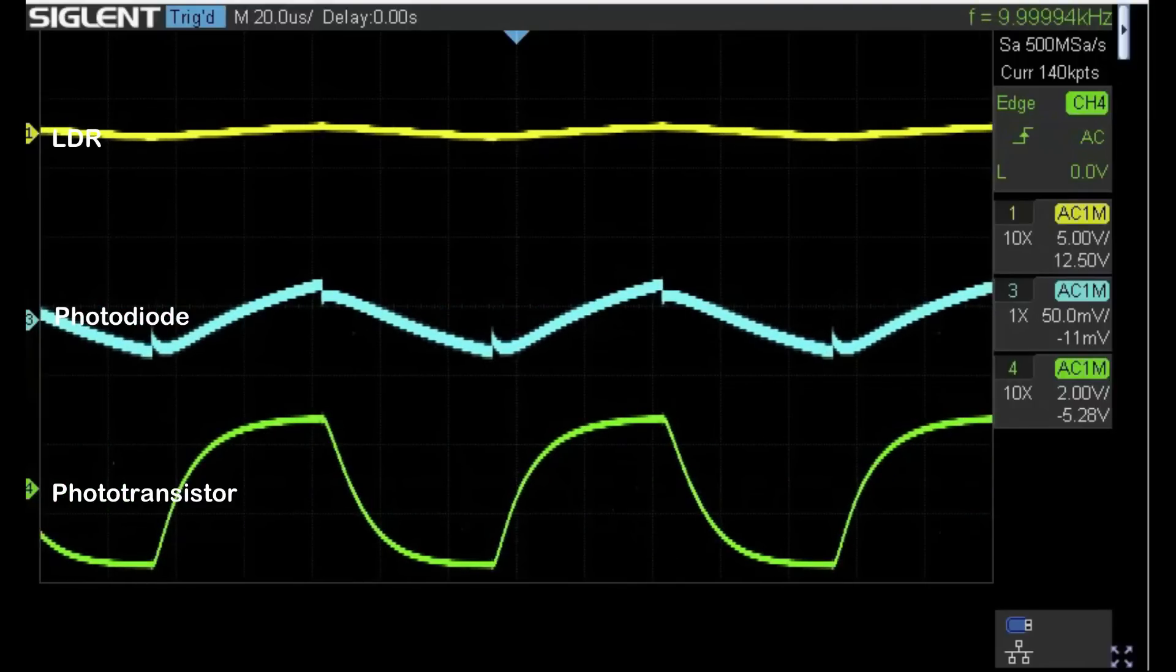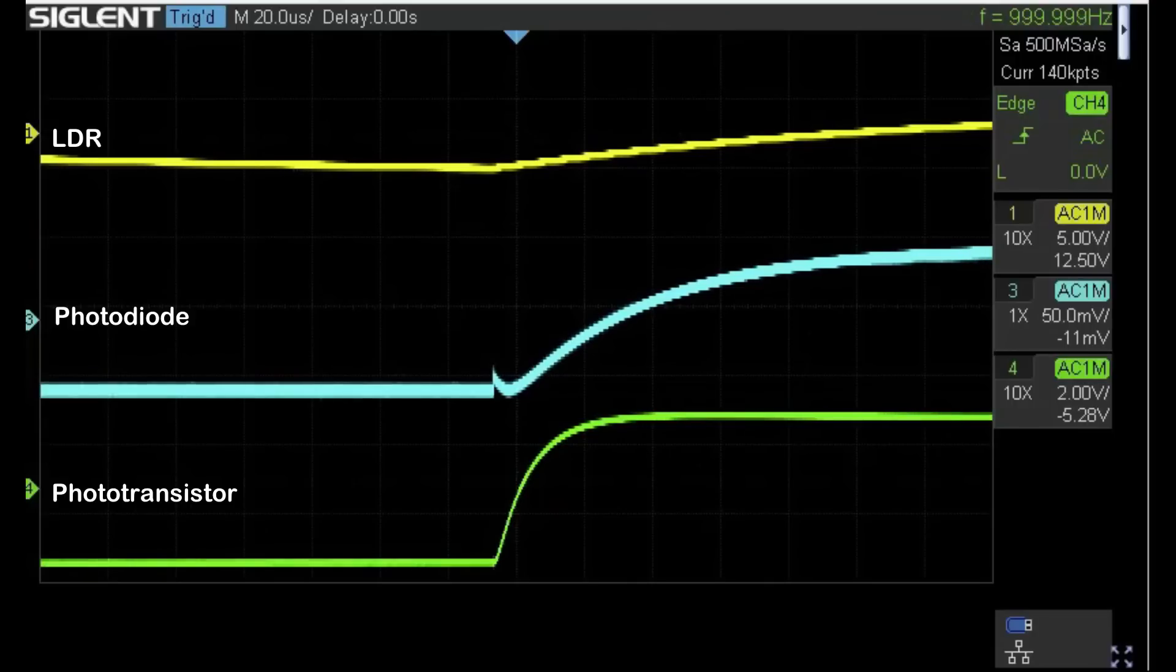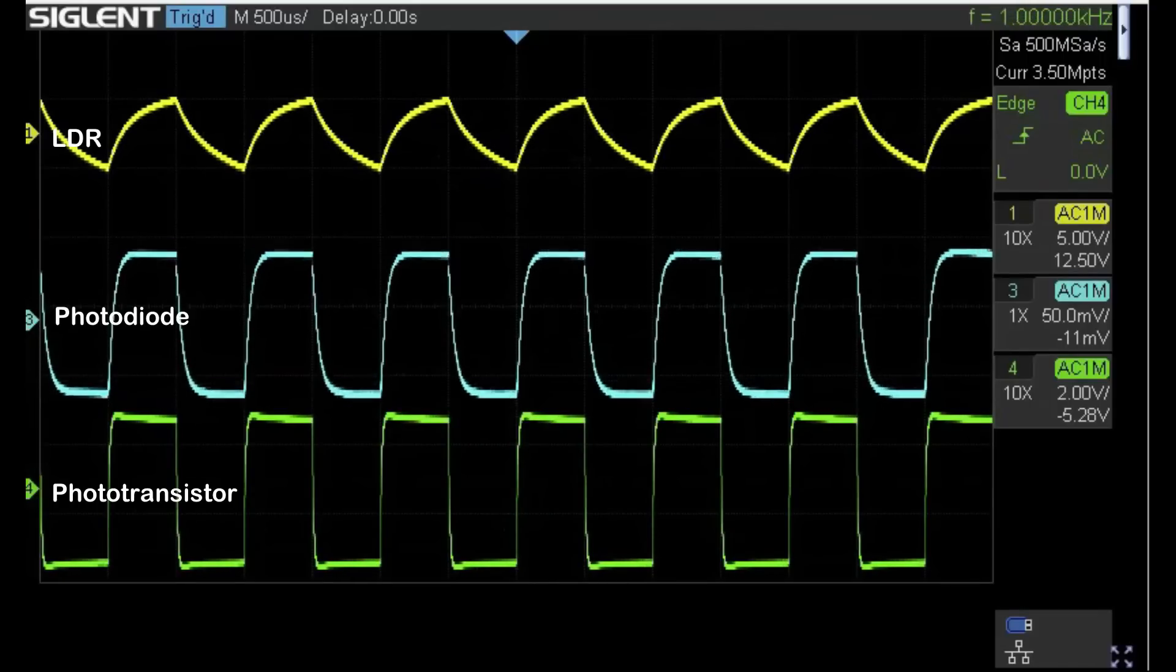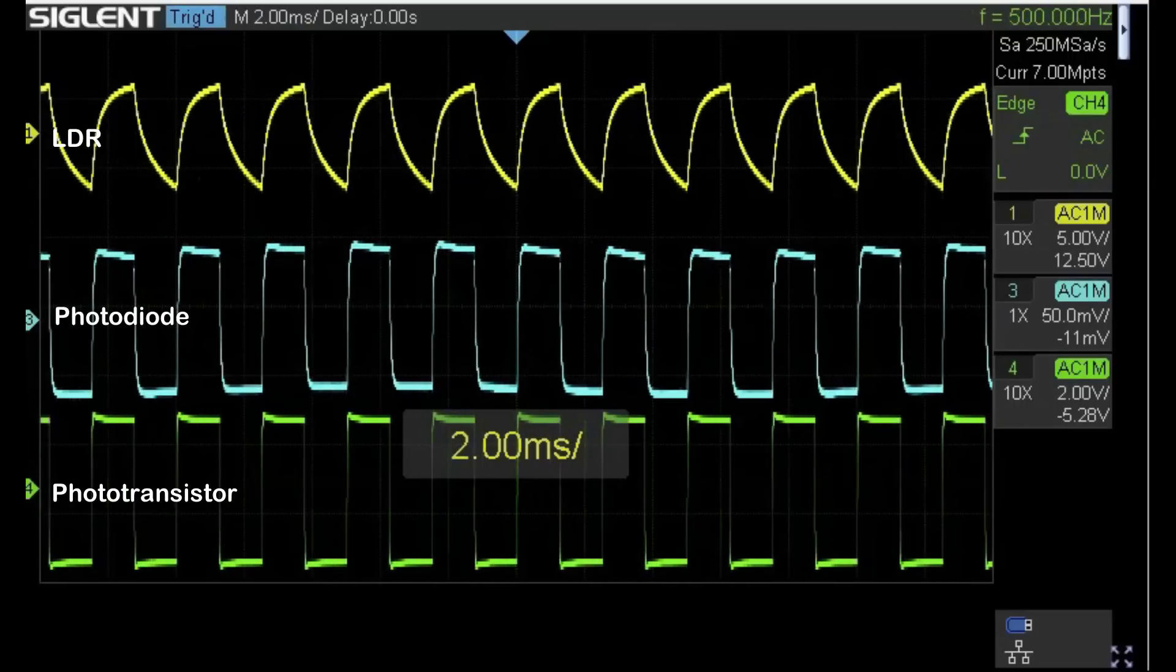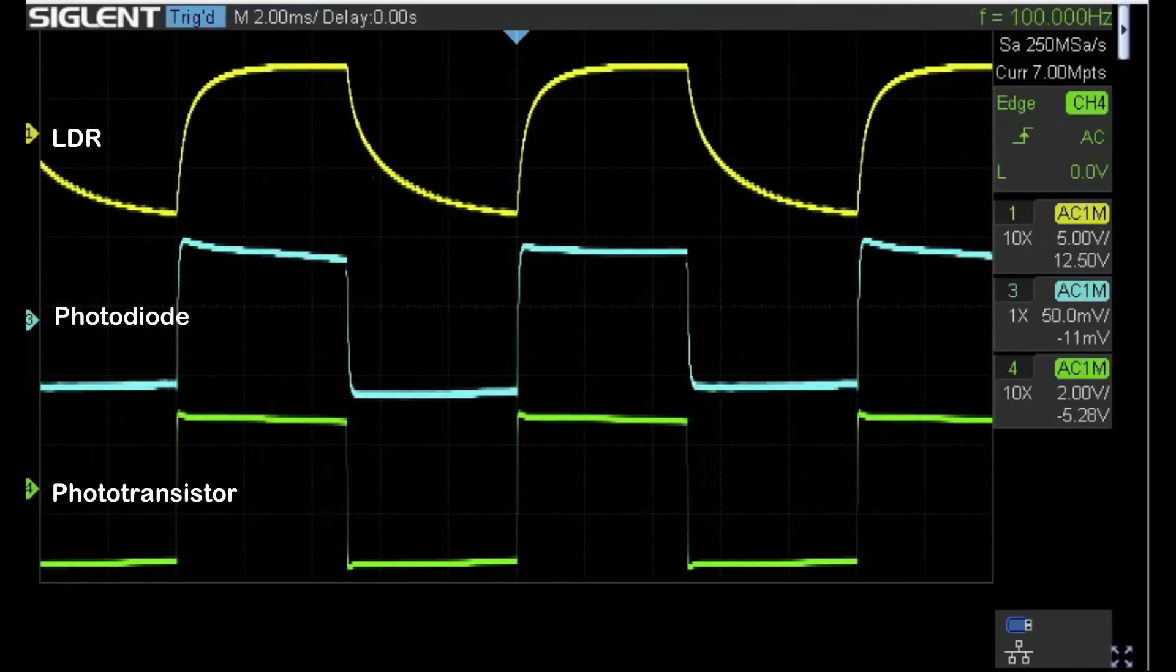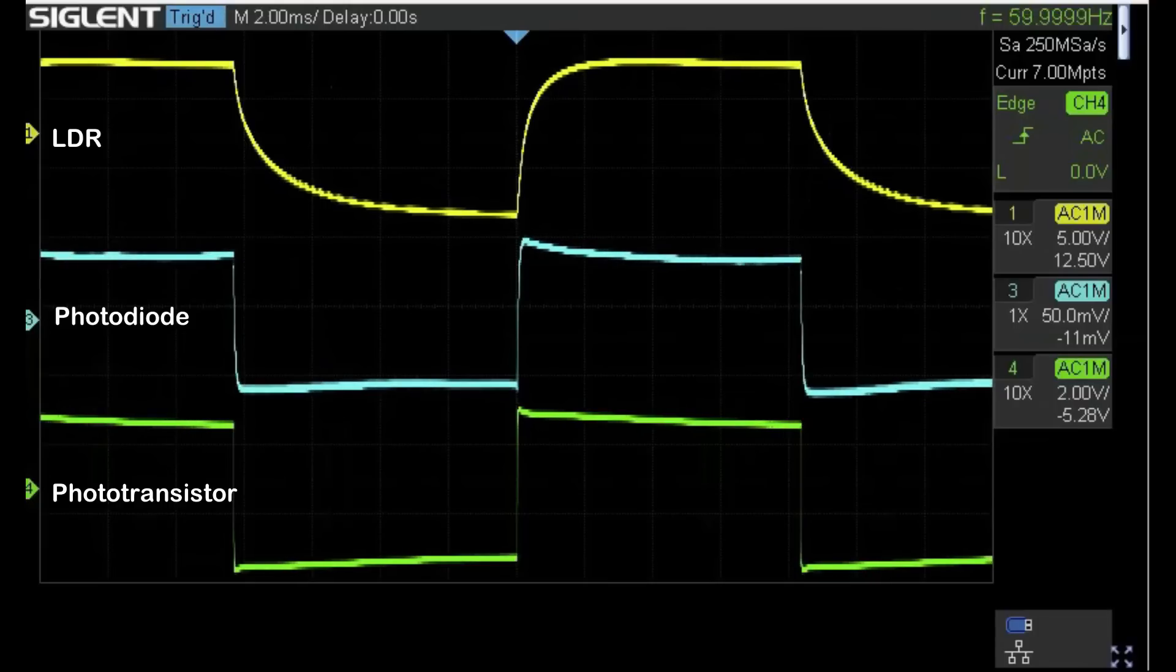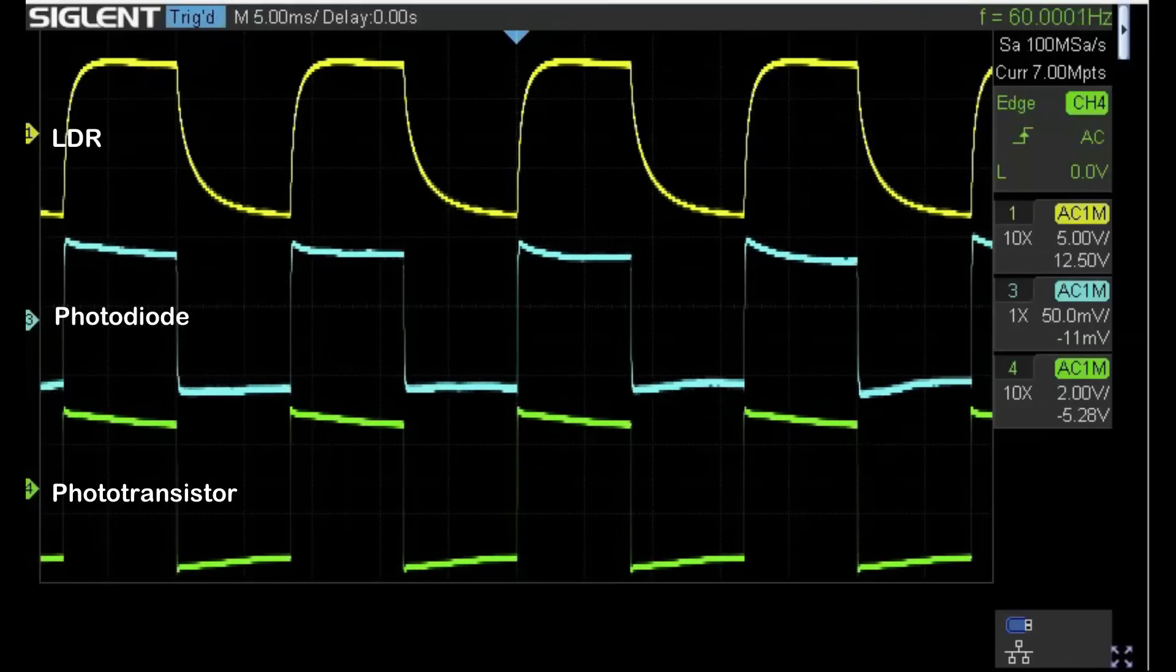I'm going to come back down now to one kilohertz. Realistically, the LDR doesn't start producing what I'm going to call a meaningful square wave probably until about 100 hertz. It's just about holding its own. If we go down to 60 hertz, it's still got that slow tail off but it's not too bad. Interesting results I thought.